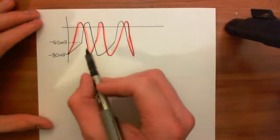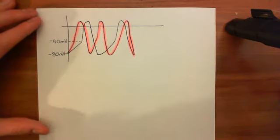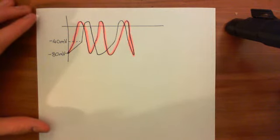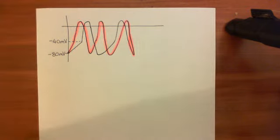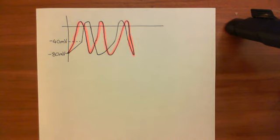Each sinoatrial node action potential represents a heartbeat, so the heart rate goes up. The reason beta-1 adrenergic receptors, when stimulated on the sinoatrial node, increase heart rate is that they increase the rate at which the sinoatrial node generates action potentials - specifically, the number of spontaneous action potentials generated within a minute. Each of those spontaneous action potentials causes the heart to beat, and therefore the heart rate increases.